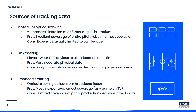GPS tracking is often used for physical data, where players wear a GPS on their jersey during games or training. This gives accurate physical data, but you're only ever going to get data on your own team, and not all players will always be wearing the GPS units.